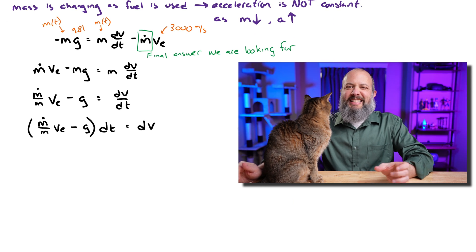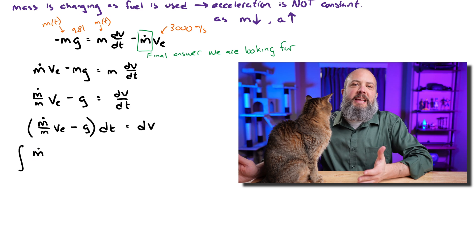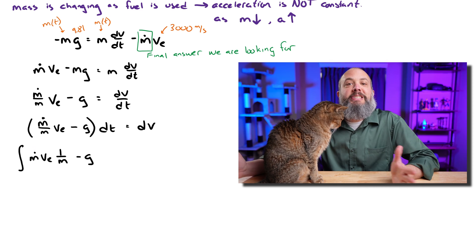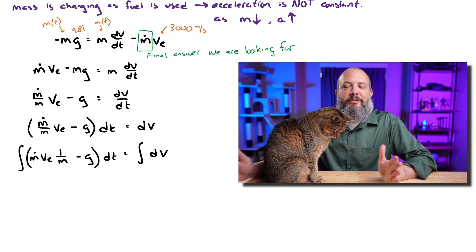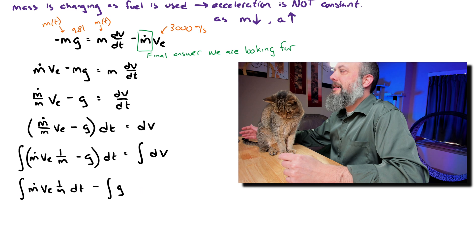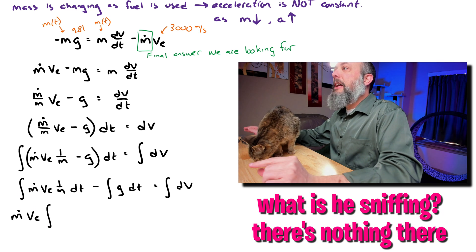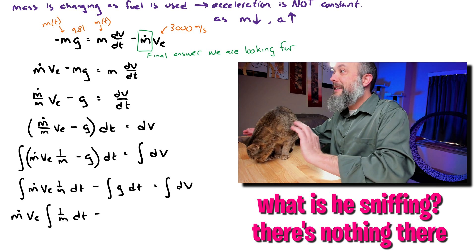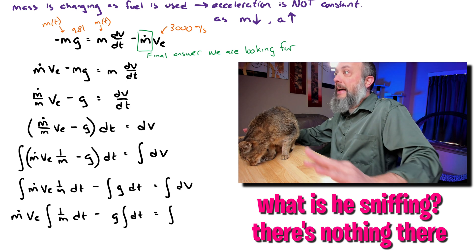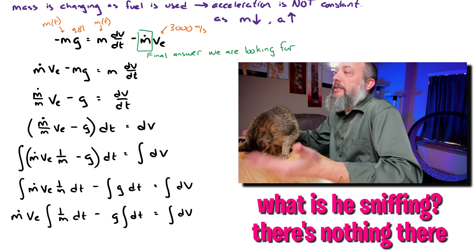Now I am going to separate the subtraction term. So my left hand side, I'll split to two separate integrals, one with my mass flow rate, and then one with my gravity. And then to make the integrals as easy as possible, I'm going to pull out everything that is a constant outside of the integrals, because those are just coefficients, they're just numbers.